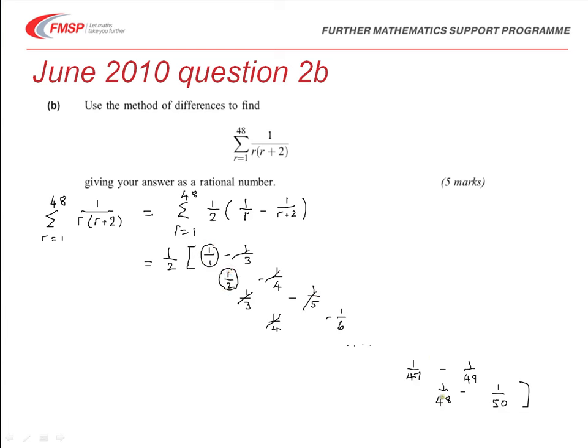So, similarly at the end, the 48th will cancel out the one that's in the line above that we haven't written, and the 47th will disappear, so we're left with this one here, and this one here.